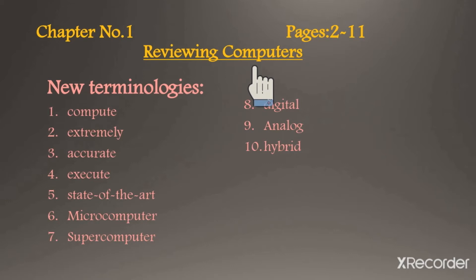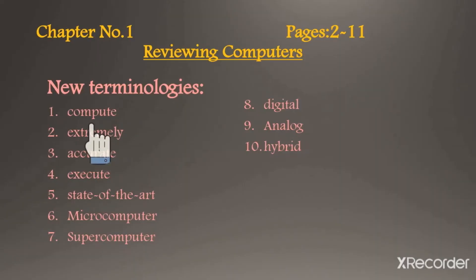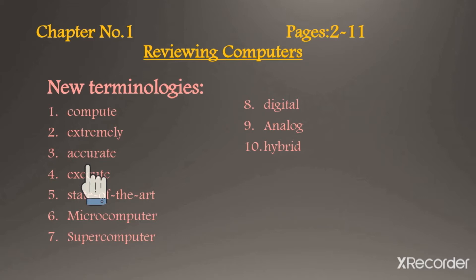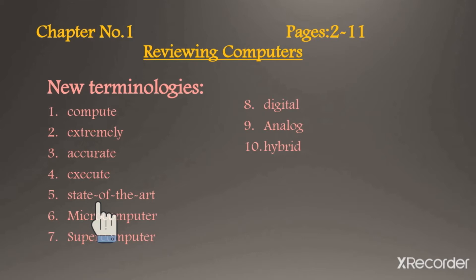In our previous class we learned about some terminologies. First we will revise those terminologies and then start today's lesson. First terminology: compute, which means to calculate — ya phir hesab karna. Second: extremely, which means bohot zada ya phir intihai. Third: accurate, means sahih, durust, ya phir free from mistake. Fourth: execute, means fulfill karna ya amal me lana. Fifth: state of the art, which means jadeed tereen.